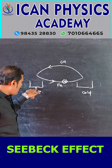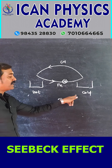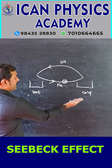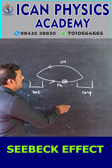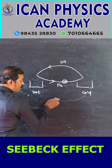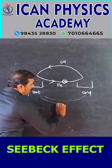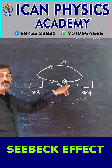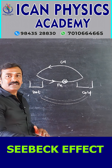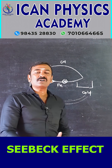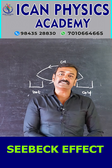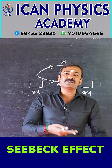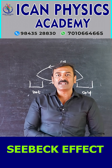At the hot junction, current is flowing from copper to iron. If the cold and hot junction interchange, the direction of the current also reverses. So, the Seebeck effect is also a reversible effect.